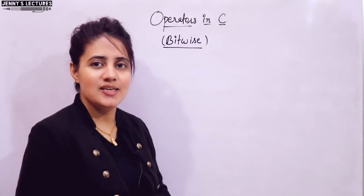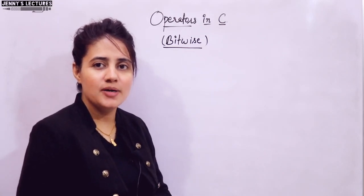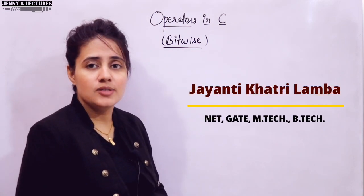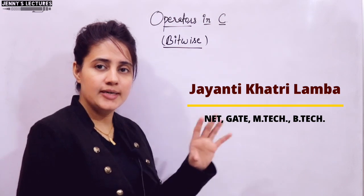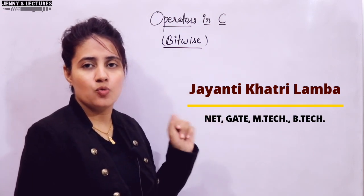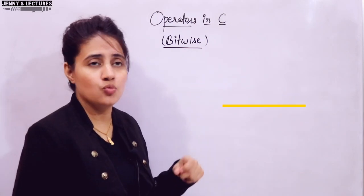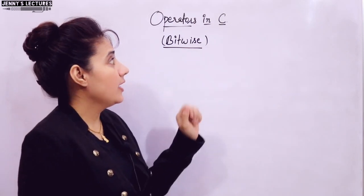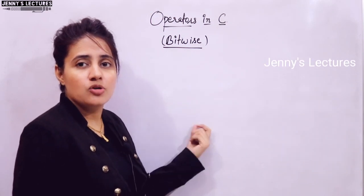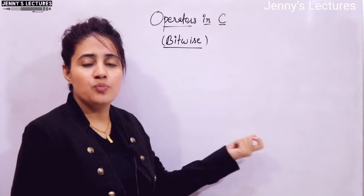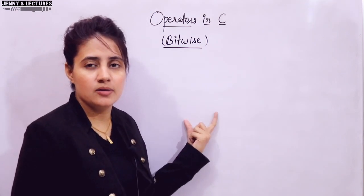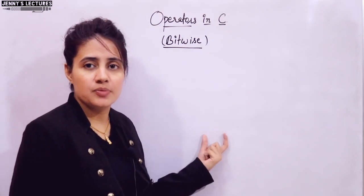In this series on learning programming in C, previous videos covered arithmetic operators, assignment operators, increment and decrement operators, logical operators, and relational operators with examples in detail. Now in this video I will talk about bitwise operators in C — what they are, their types, why to use them, how to use them, the syntax, and what output you will get when you use these operators in your program.